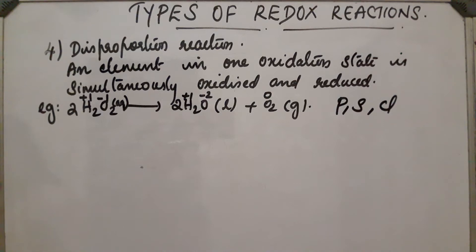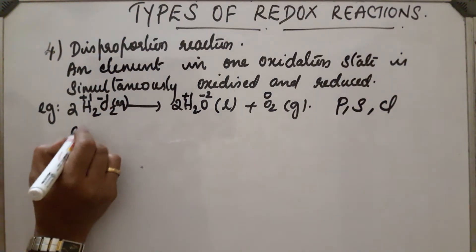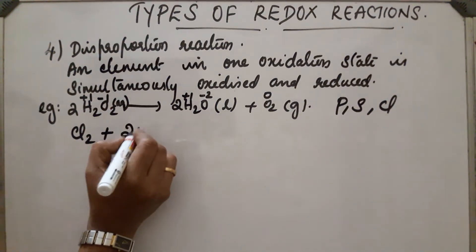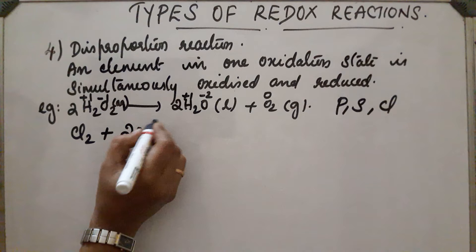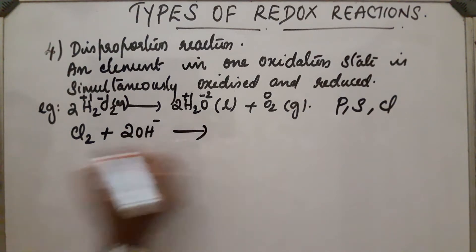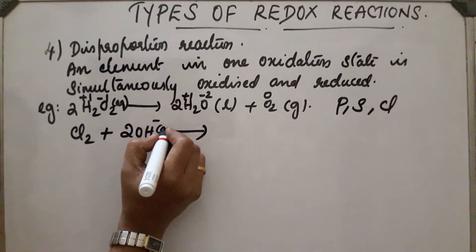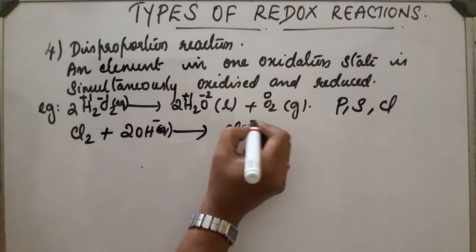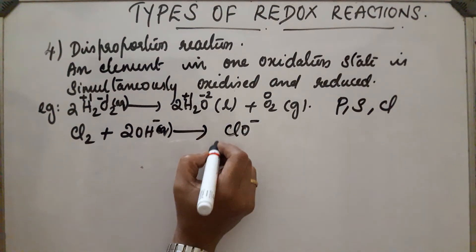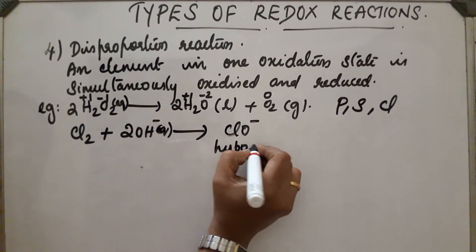Phosphorus, sulfur, chlorine, bromine, and iodine all give disproportionation reactions. Let us see them one by one. In the case of chlorine: Cl₂ + 2OH⁻ → ClO⁻ (hypochlorite) plus Cl⁻.